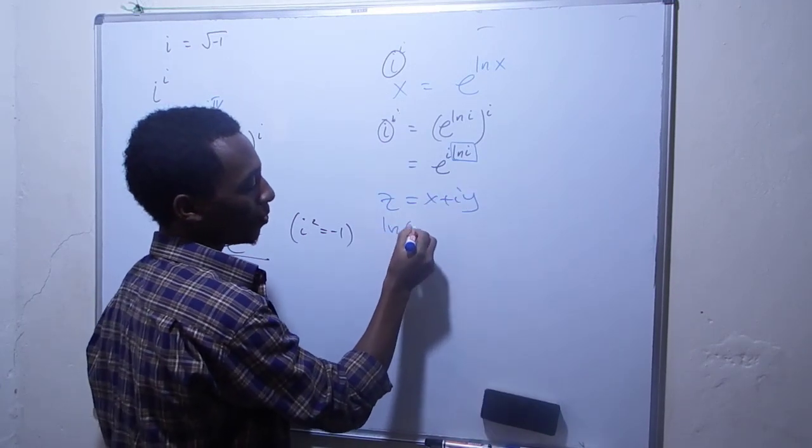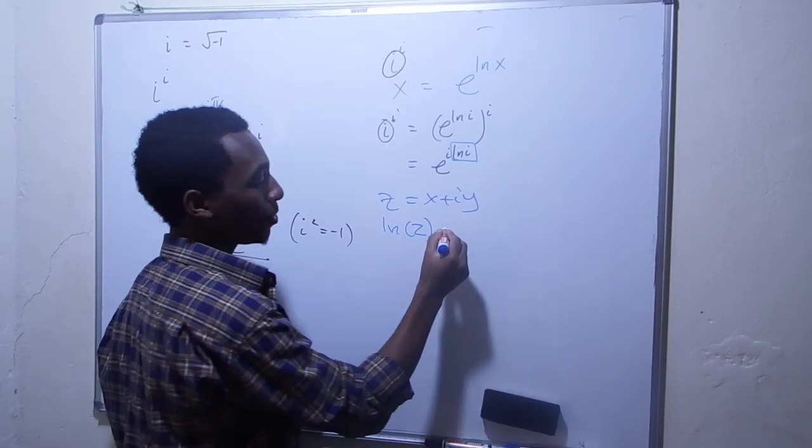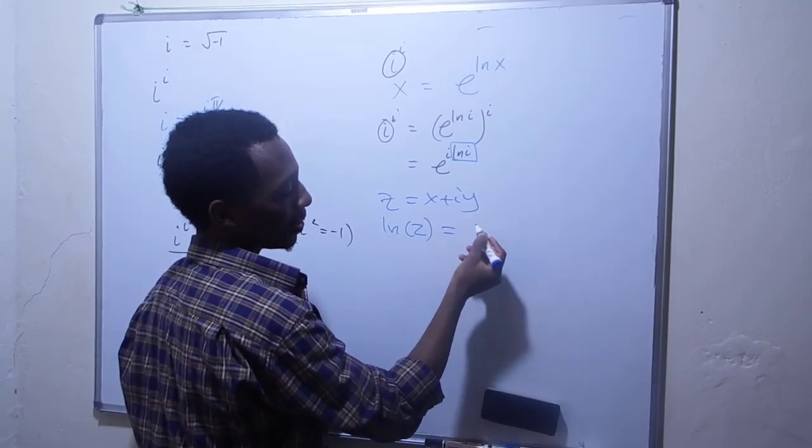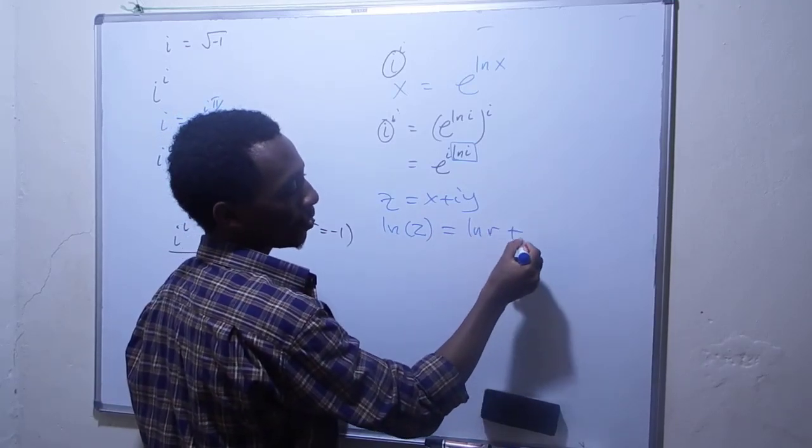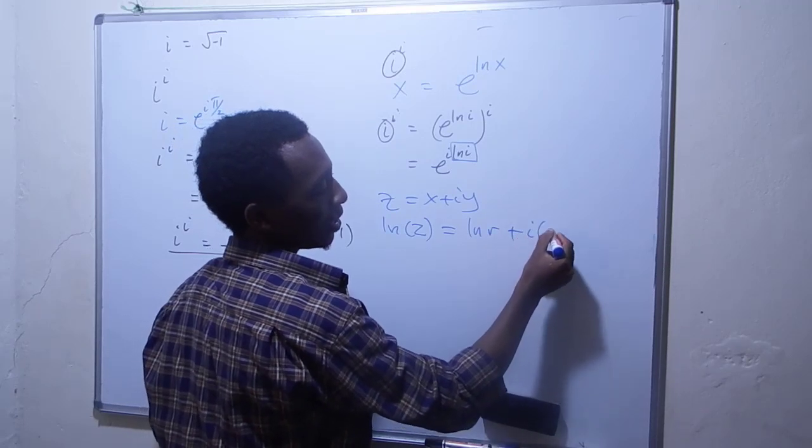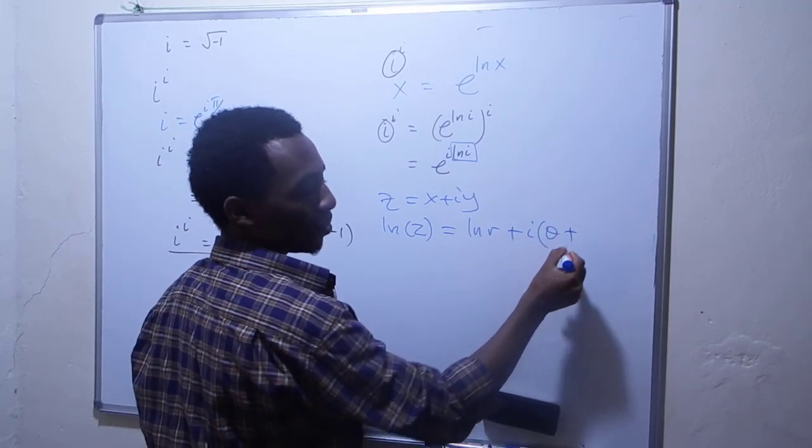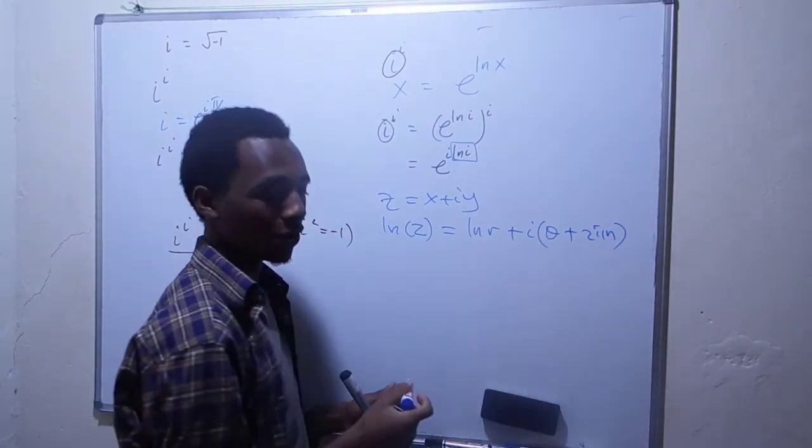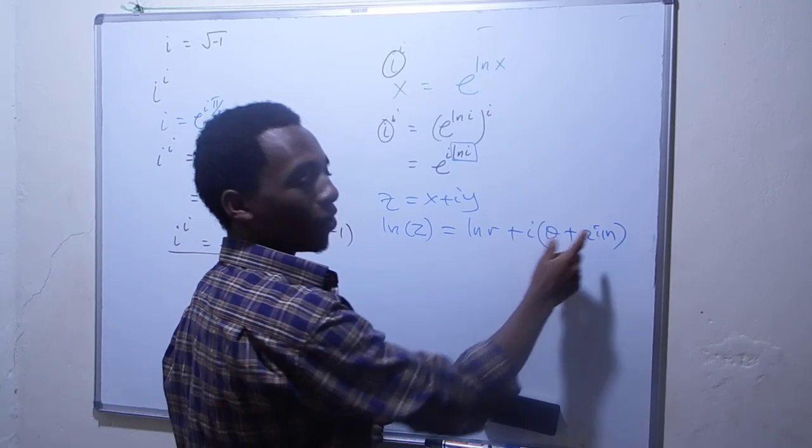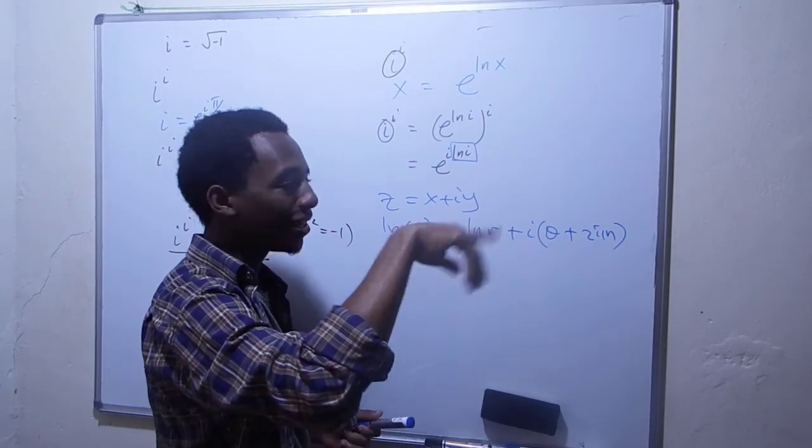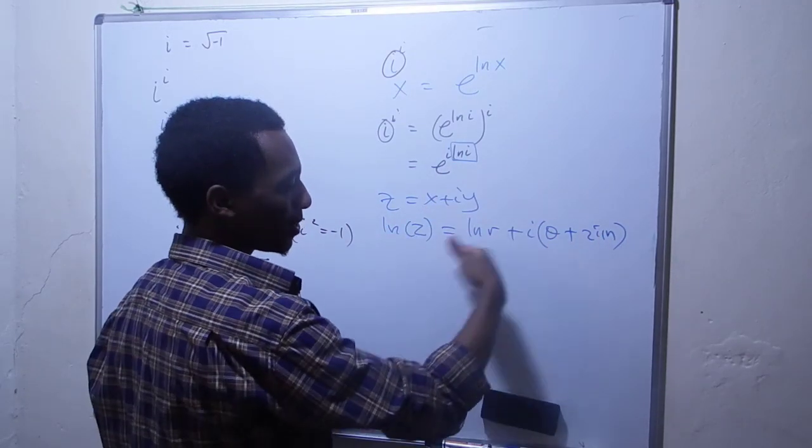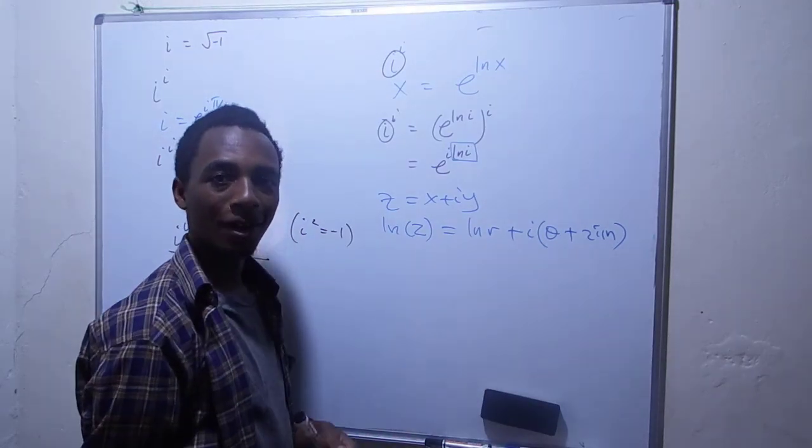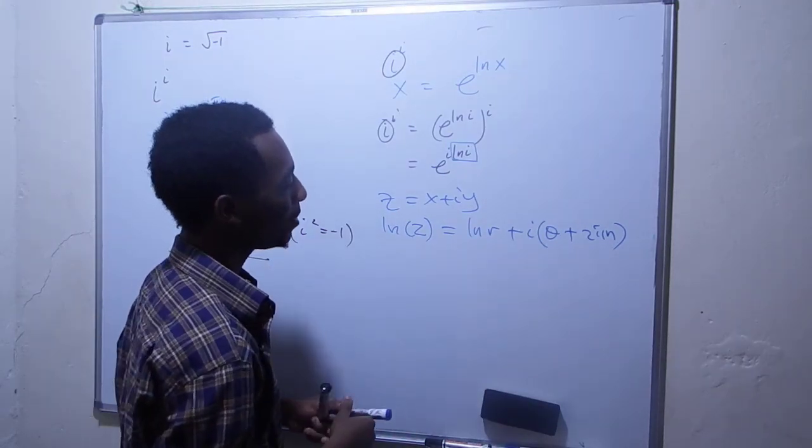is given by the natural log of the modulus plus i times theta plus 2πn, because theta is the principal argument, but you can get more arguments by rotating 360 degrees. That's the general formula for finding the log of a complex number.